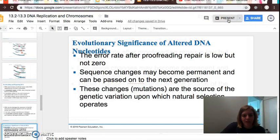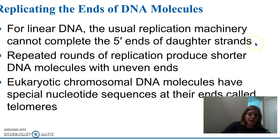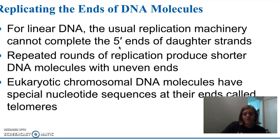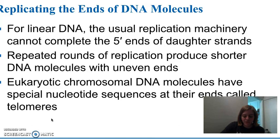When talking about DNA replication in eukaryotic cells, keep in mind that the DNA is linear, not circular. Typically the usual replication machinery and enzymes are not able to complete the very ends of the daughter strands at the five prime side. If we kept replicating the DNA, we'd eventually get shorter and shorter DNA molecules with uneven ends. To combat that, eukaryotic DNA molecules have special nucleotide sequences at the end of their molecules known as telomeres, which act as a buffer zone to protect the organism's genes and prevent the erosion of DNA.